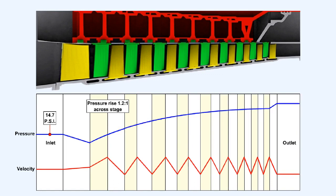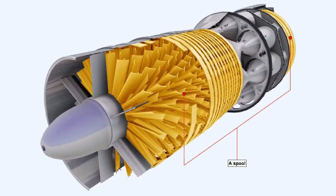The pressure rise across each stage is only quite small, the ratio being about 1.1 or 1.2 to 1, meaning that in the first stage the pressure might only increase by about 3 pounds per square inch. As a consequence, in order to achieve the compression ratios demanded by more powerful engines, many rotor stages may be fitted on one shaft driven by its own turbine. Assuming a pressure ratio of 1.2 to 1 for each of 10 stages, the output pressure would be in the region of 91 pounds per square inch. This arrangement — where a number of compressor rotor stages on a single shaft are driven by a turbine — is termed a spool.